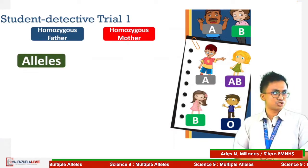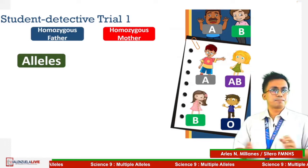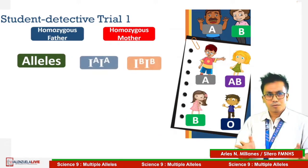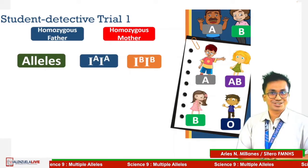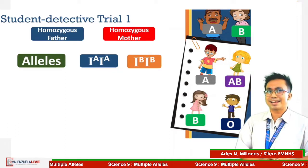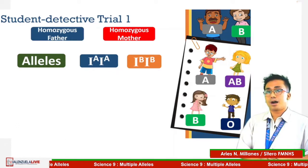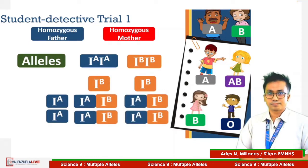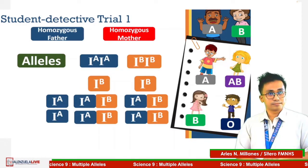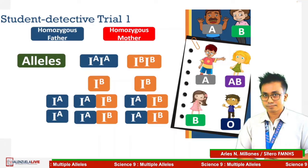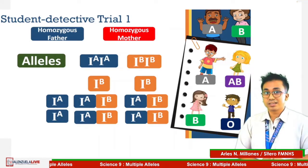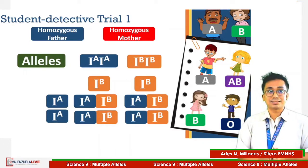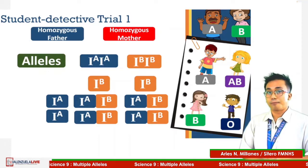Now let us give it a try. Trial 1: suppose both parents are homozygous. What are the alleles? After placing the alleles on the Punnett square, we get this result. Is it correct? It is a big no. Why? Because we only obtain blood type AB, which is the blood type of Arya only.